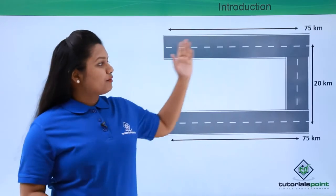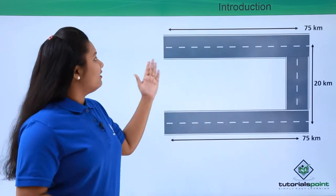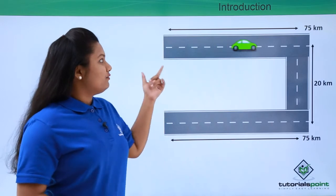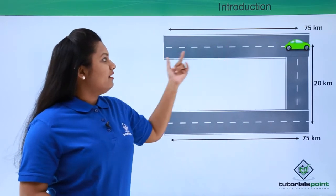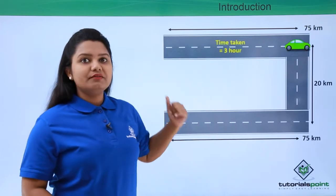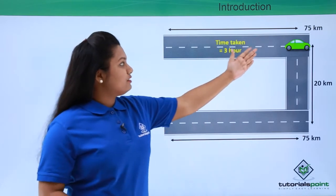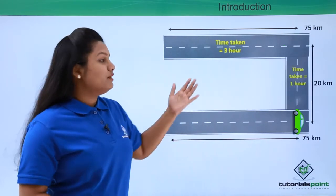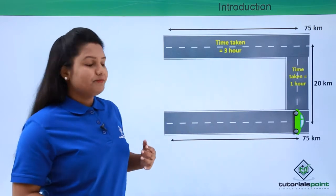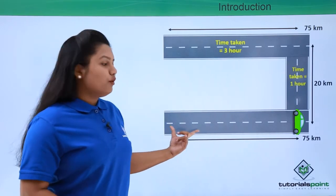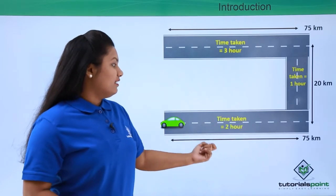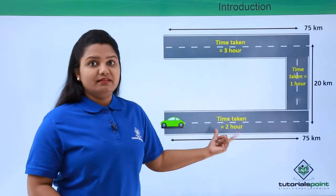Now suppose I have a road like this and a car starts from here and covers the whole distance. The first 75 kilometers it takes three hours to cover, and then the next 20 kilometers, the car takes let's say only one hour, it goes very fast. Now let's say this road which is of 75 kilometers again, the car takes around two hours to cover this road.